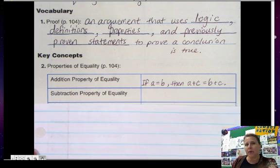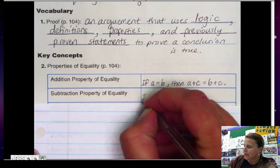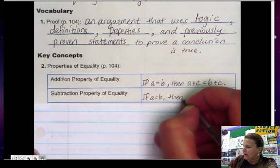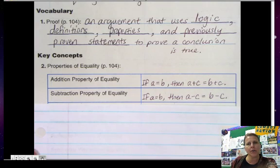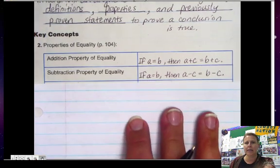The subtraction property of equality is the same except we're going to subtract instead. So if a equals b then a minus c equals b minus c. So you're allowed to subtract something from both sides of the equation and it still makes it true.